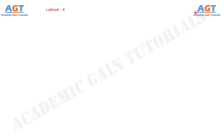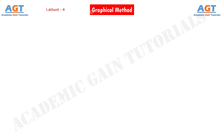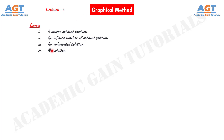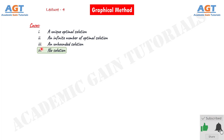Welcome to Academic Game Tutorials. This is our fourth lecture video on Operations Research, where we are learning the graphical method. As we have discussed in previous lectures, we usually get to see four types of cases in graphical method. In the previous three lectures we finished discussing the first three cases: unique optimal solution, an infinite number of optimal solutions, and an unbounded optimal solution. This is our last lecture on graphical method, and in this lecture we will discuss graphical method for no feasible region or no feasible solution.